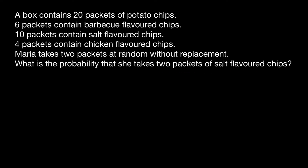The total number of packets we are choosing from is 20, and 10 of them are packets that contain salt flavored chips. So to choose the first packet, which is going to be salt flavored chips, is going to be pretty easy. The probability is going to be 10 out of 20, which is the same as one half.